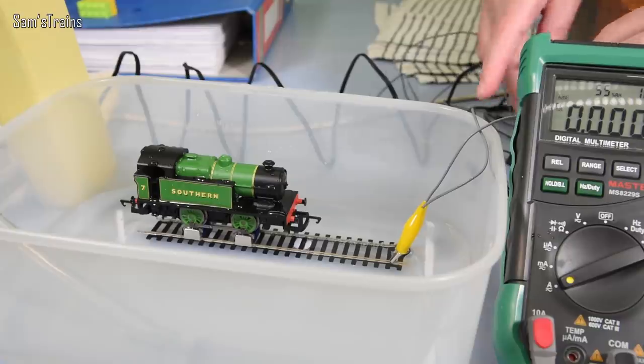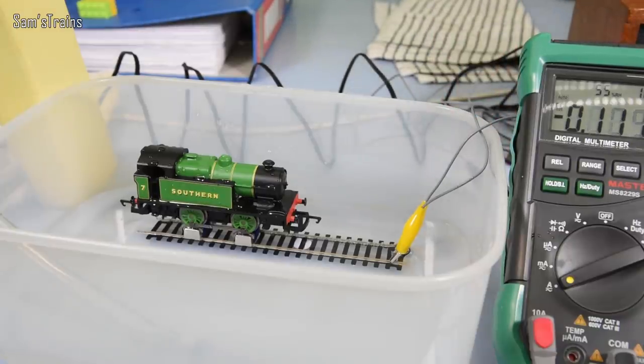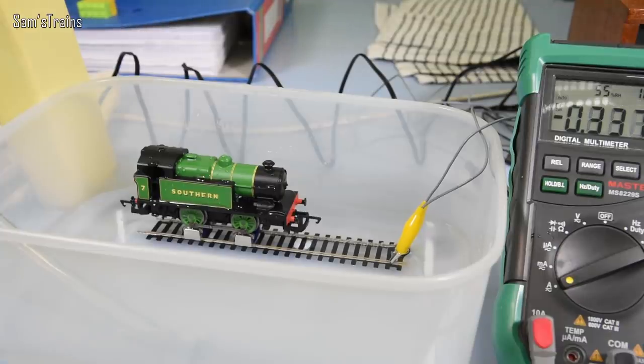Okay, so the water level is now well below the loco, which means if it wasn't soaking wet it should be able to run normally now. So let's give that another try. Yeah, it seems like it's probably dead.